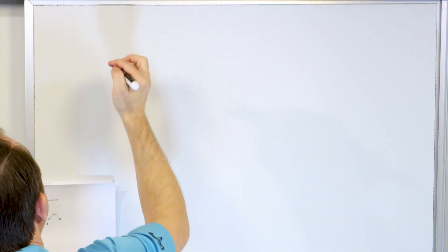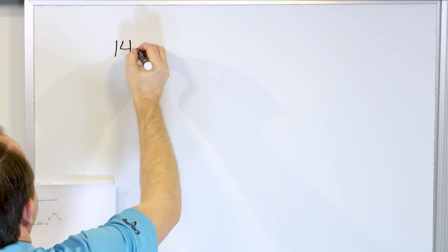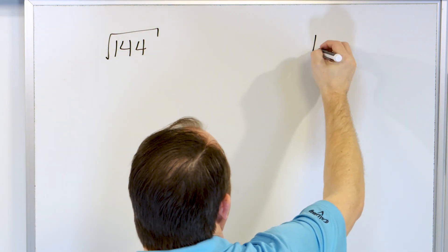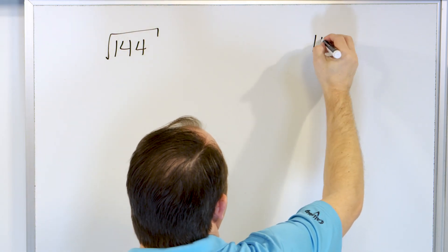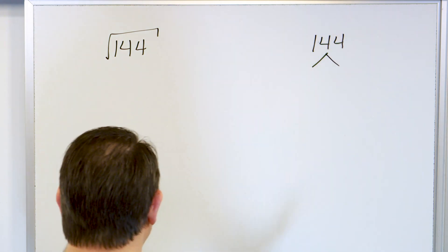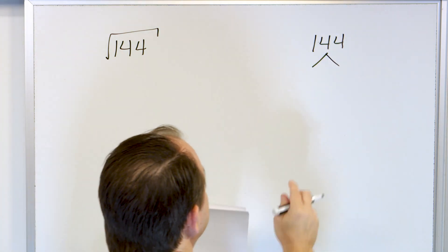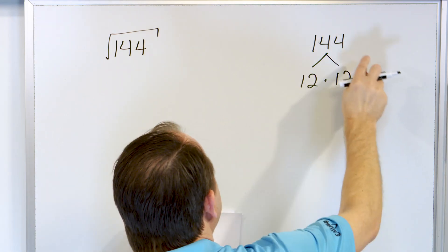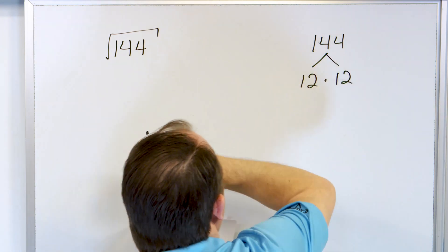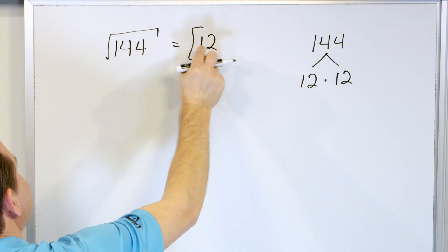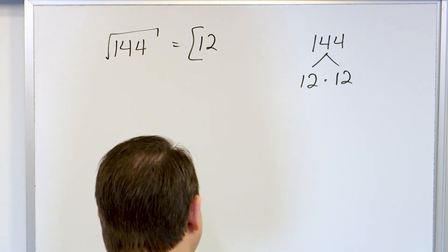Getting to the very top of our multiplication table knowledge — what's the square root of 144? We know the answer is going to be 12, because we recognize that 12 times 12 is 144. So we could circle this pair right here and say the answer is 12.